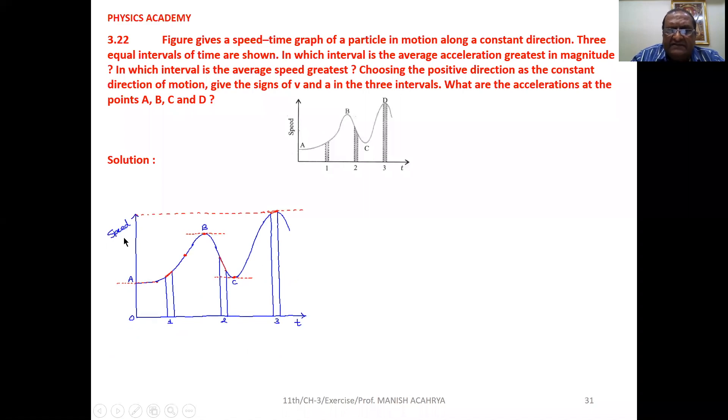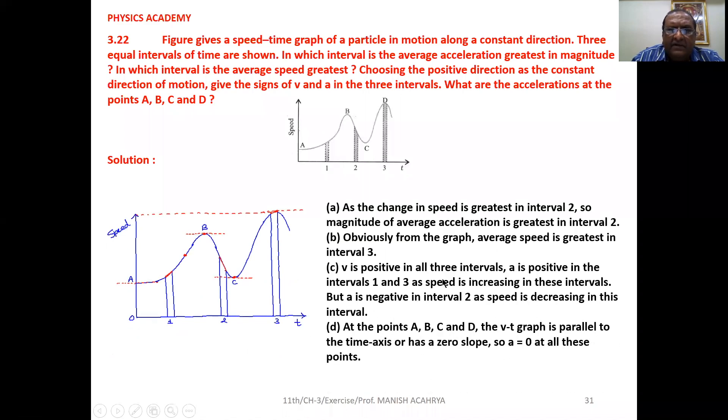The graph is of speed versus time. As the change in speed is greatest in interval 2, the slope in this time interval is greatest. So the magnitude of average acceleration will be greatest in interval 2.